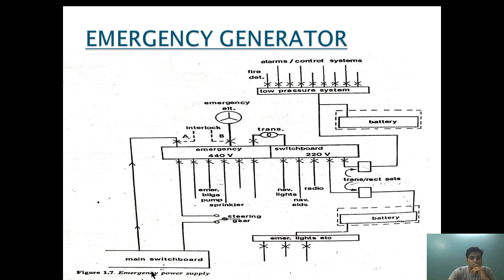This is the main switchboard. This is the breaker of the main switchboard and this is the emergency generator. Whenever a power failure occurs, this breaker gets disconnected. When this breaker gets disconnected, the emergency alternator breaker gets connected and provides backup power. An interlock is provided such that both breakers don't get connected simultaneously.